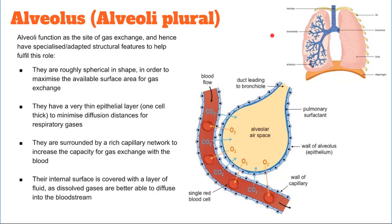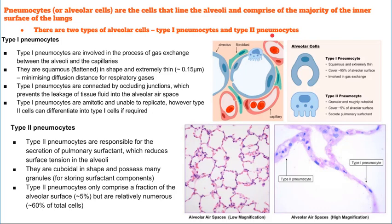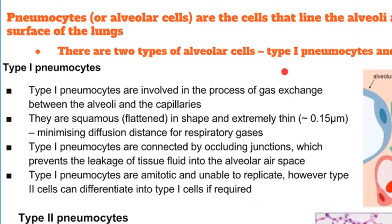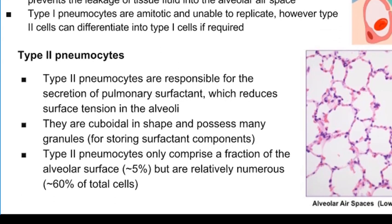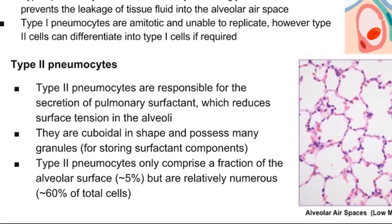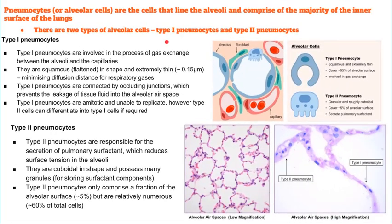The walls of the alveoli contain two types of cells called pneumocytes. Type 1 pneumocytes cover most of the surface — about 97% of the air sac — and are responsible for gas exchange itself. Type 1 cells are about twice as numerous as type 2 pneumocytes, which are larger and rounder. Type 2 pneumocytes produce and secrete a liquid containing surfactant, which reduces surface tension and prevents the sides of the alveolus from sticking together. Type 1 pneumocytes can't divide, but if they're damaged, type 2 cells can divide to replace them.